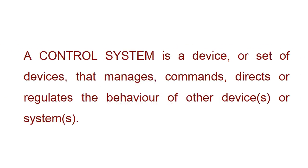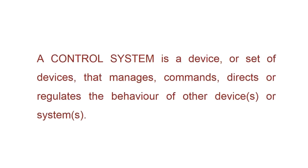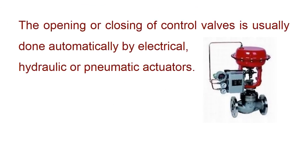A control system is a device, or set of devices, that manages, commands, directs, or regulates the behavior of other devices or systems. The opening or closing of control valves is usually done automatically by electrical, hydraulic, or pneumatic actuators.